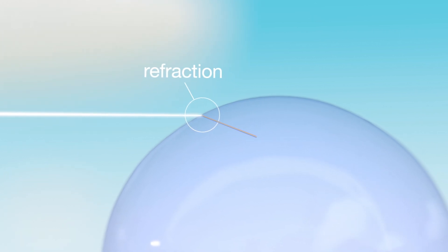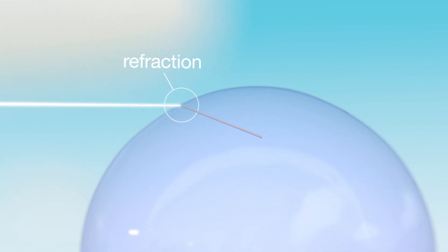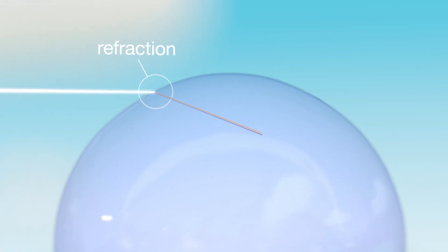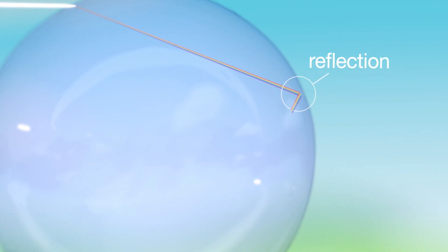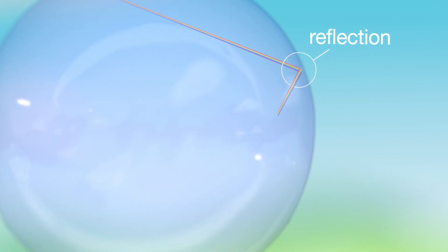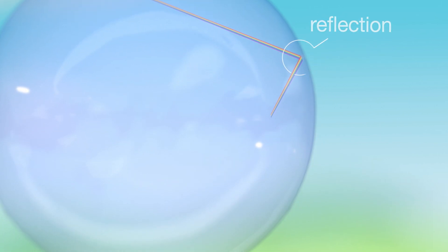When this white light reaches earth and strikes a raindrop at an angle, it refracts, or bends, in the water, slowing down and changing direction. All the different colours that make up white light refract at slightly different angles due to their difference in wavelength. Lower wavelengths, like blue and violet, refract at smaller angles than higher wavelengths like yellow and red.